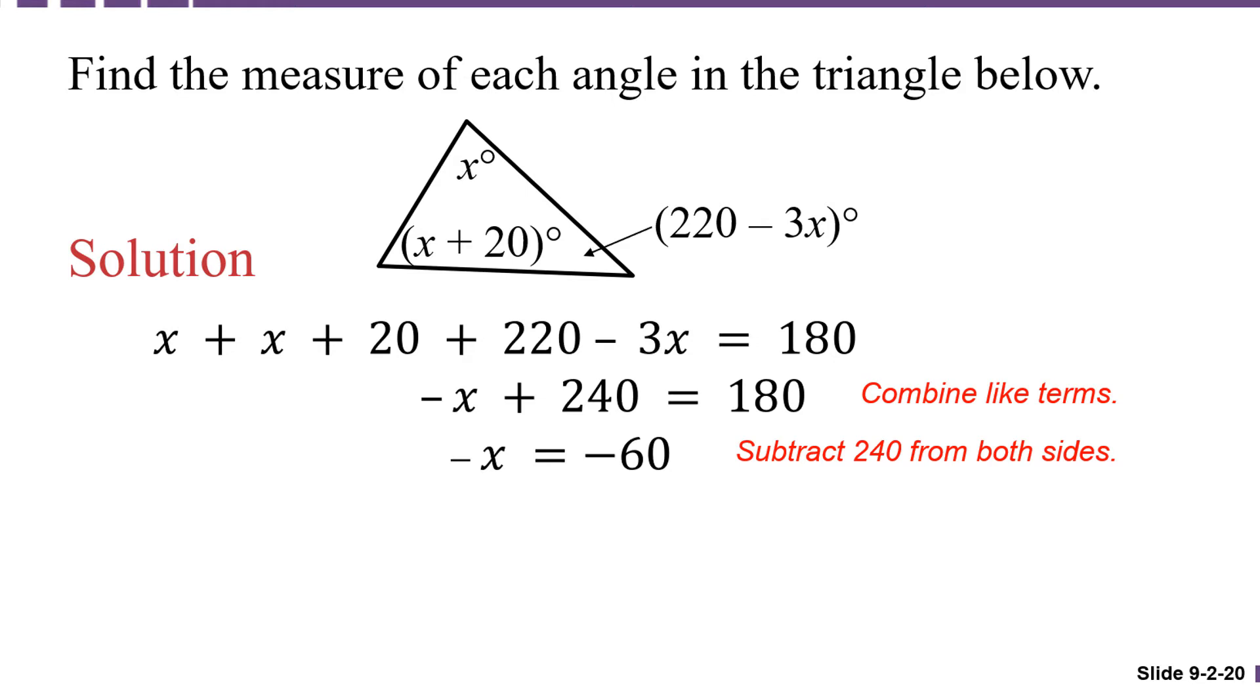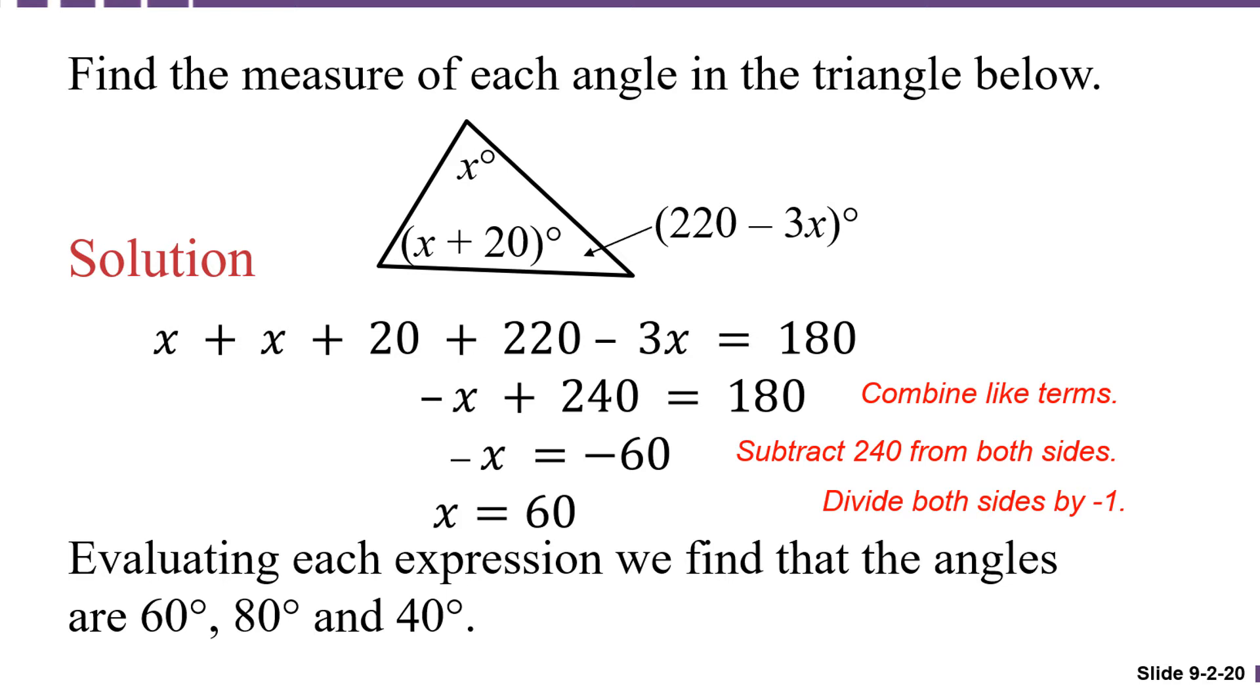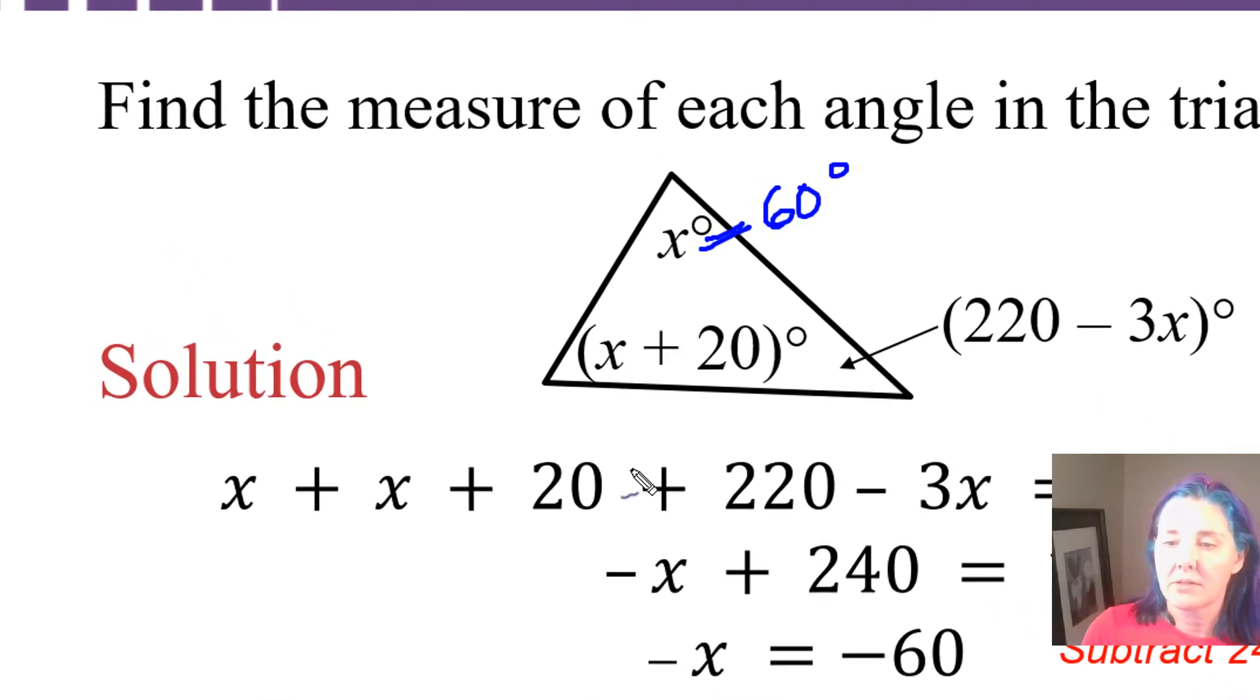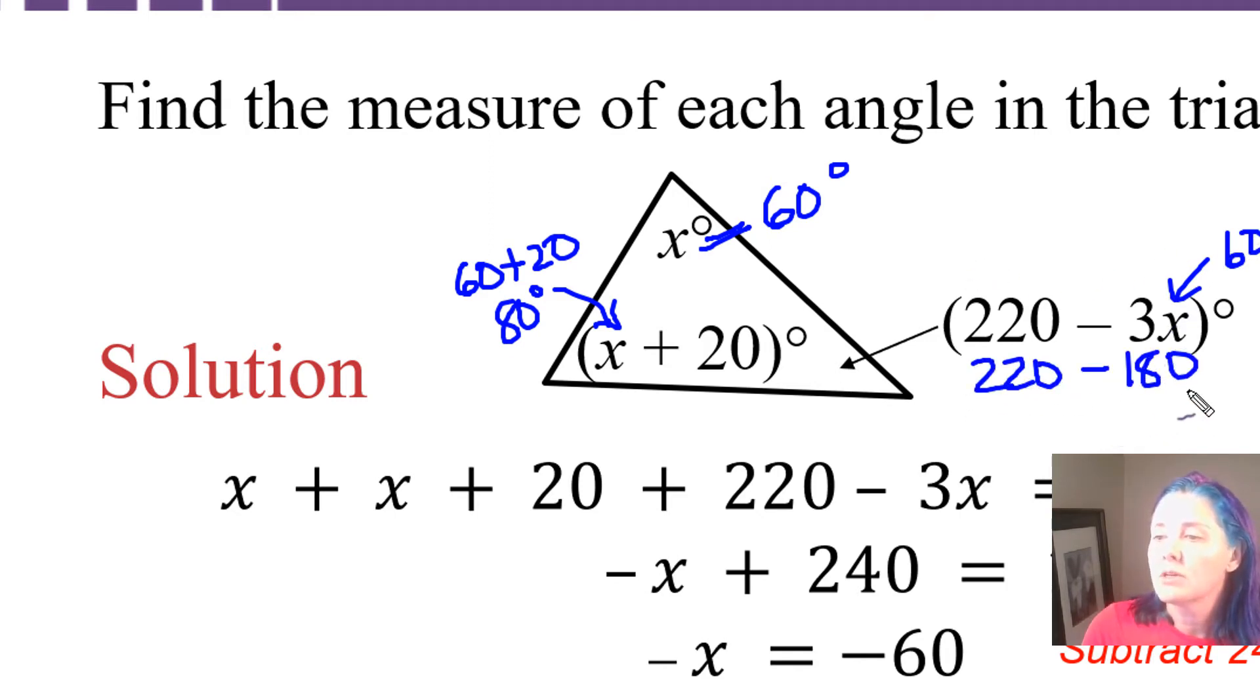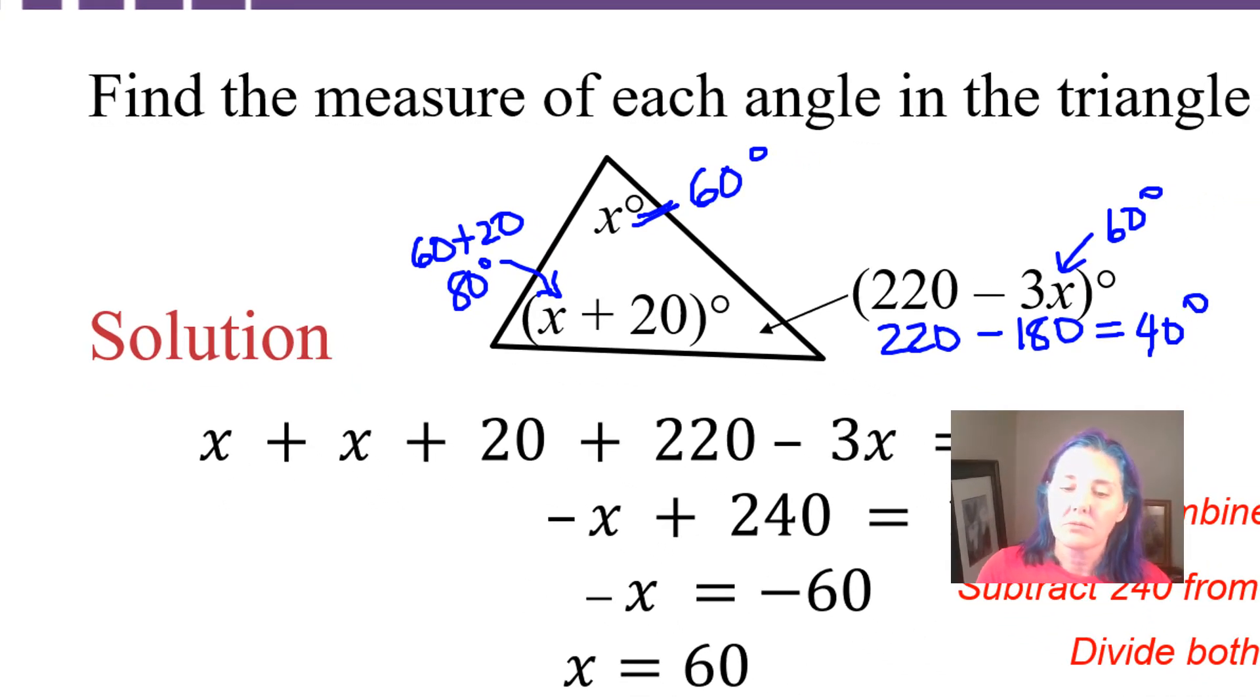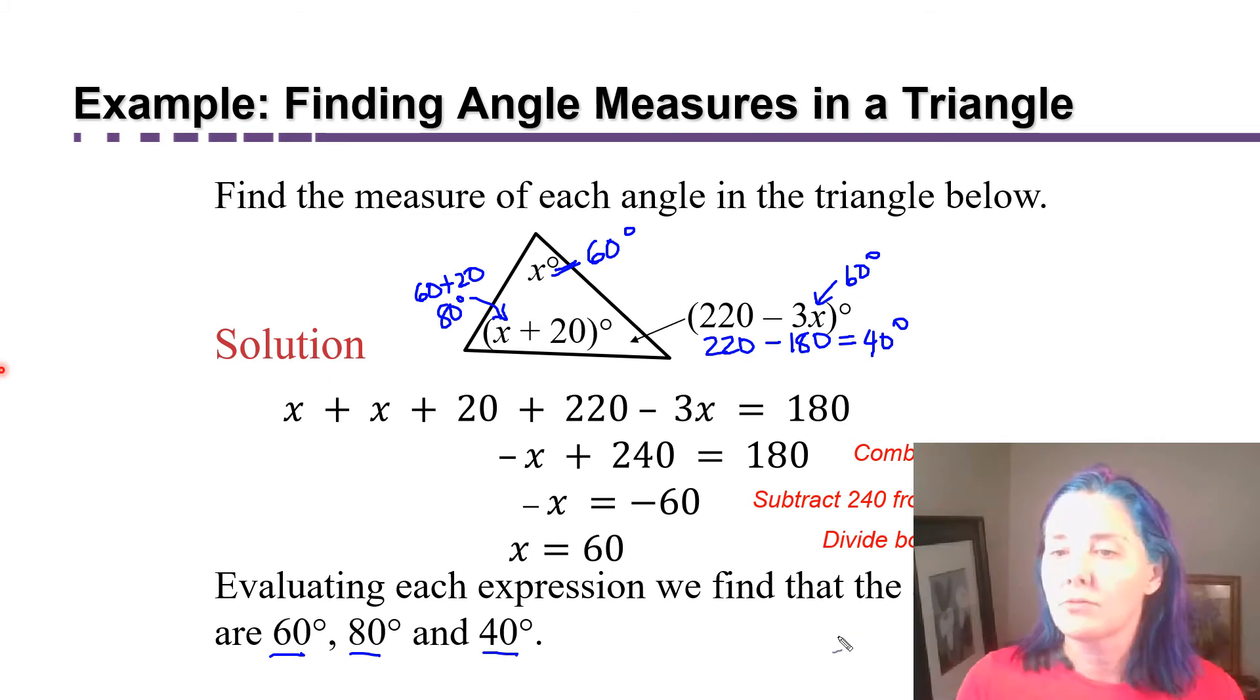How do you get rid of that negative in front of the x? If you said divide by negative 1, you are correct. We're going to divide both sides by negative 1, which tells us that x must be 60. We're almost finished, but we have to evaluate each expression. x is equal to 60, so we know that angle is 60 degrees. This is going to be 60 plus 20, or 80 degrees. And over here, we have 220 minus 180, which is 40 degrees. So, the three angles are 60 degrees, 80 degrees, and 40 degrees.